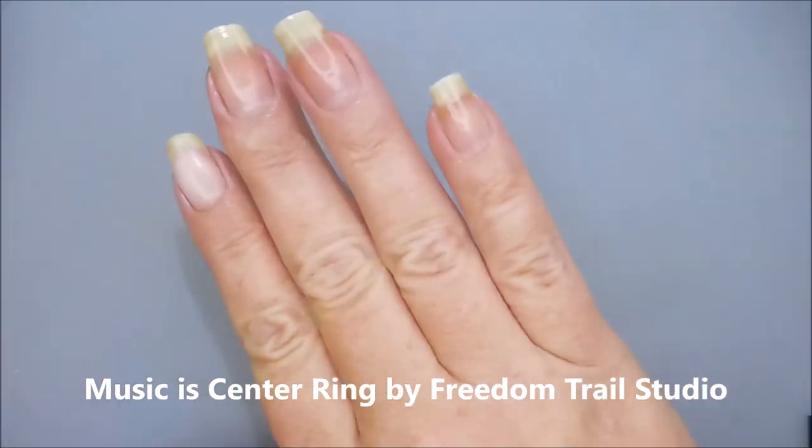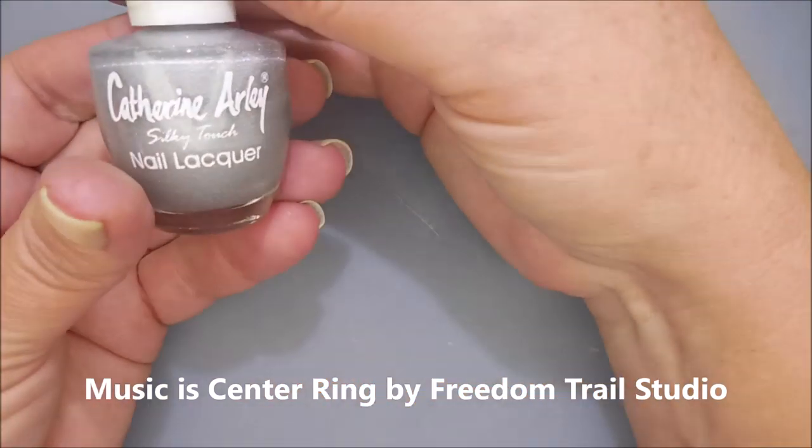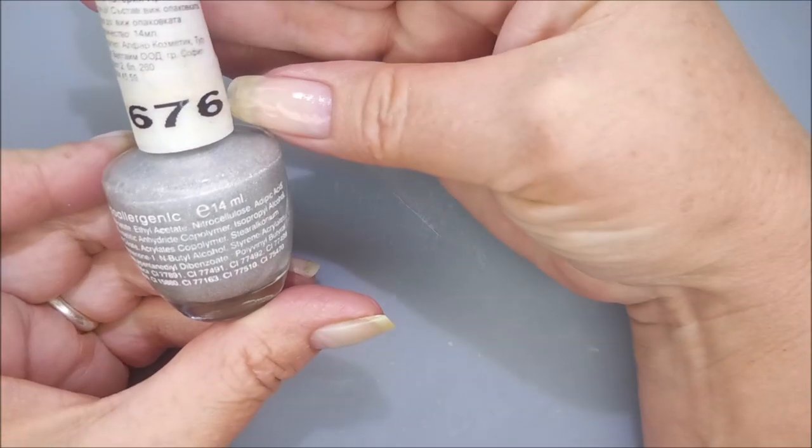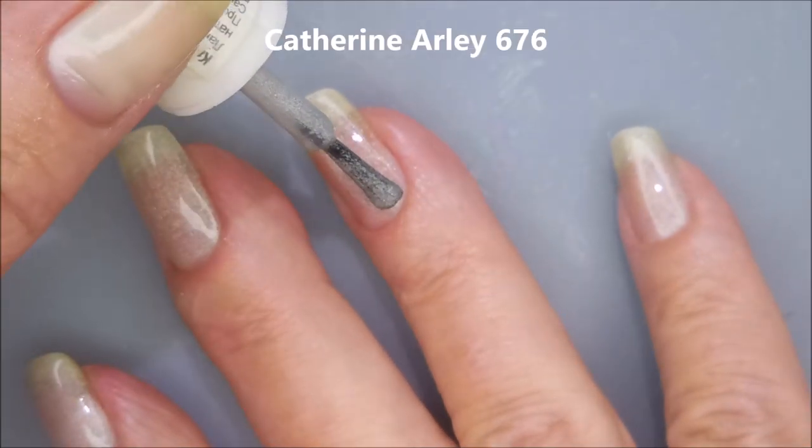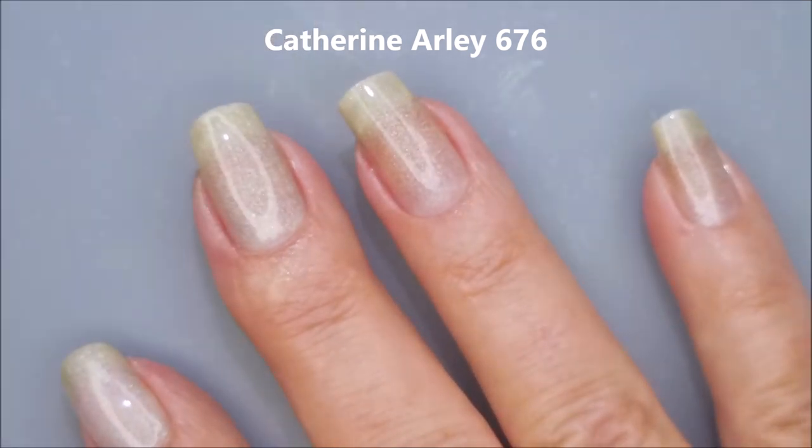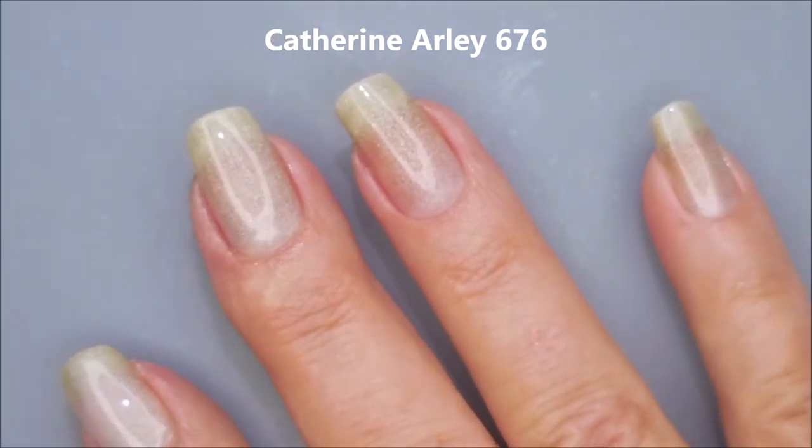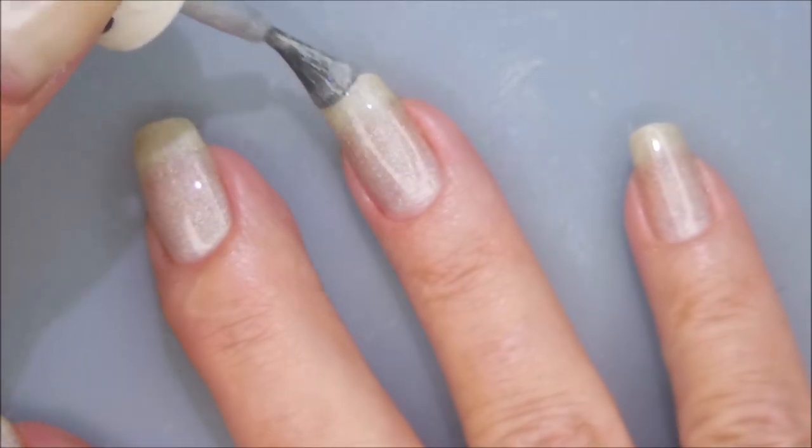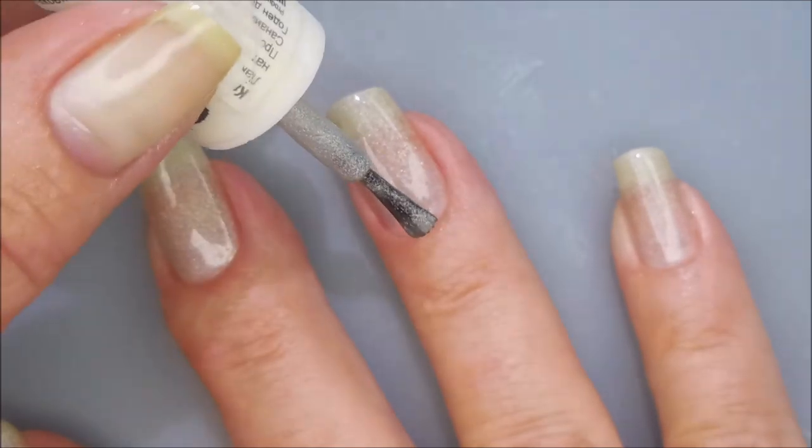I've started off with Peel Ease as my base coat. I'm going to start with a base color of this Catherine Arley number 676. It's just an old polish in my collection I had to pull out. It's a very sheer polish. I didn't remember it being this sheer. These were some of the first holos I ever bought. I bought a whole bunch of them. So I thought I'd break this one out and just use it as my base polish today.